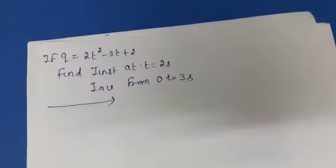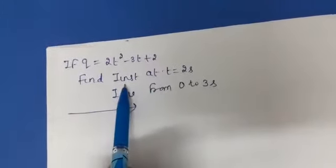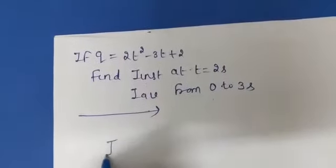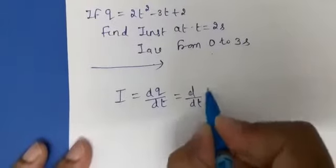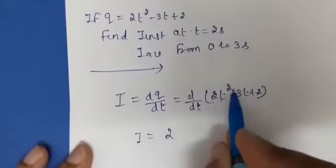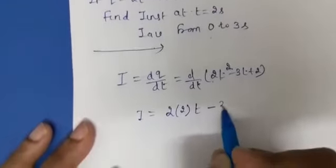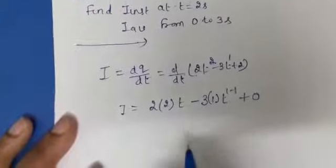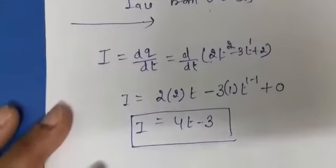Now let me take a few numericals on the concept of current. Charge Q is given to be 2t² minus 3t plus 2. Find the instantaneous current at t equal to 2 seconds and the average current from t equal to 0 to 3 seconds. As we know, instantaneous current is the rate of flow of charge — the first derivative of charge with respect to time. So you have to differentiate: dQ/dt gives 2 into 2t minus 3, which is 4t minus 3. So instantaneous current comes out to be 4t minus 3.